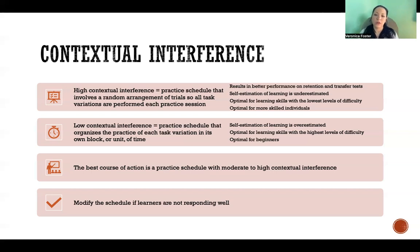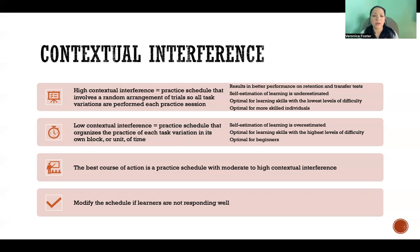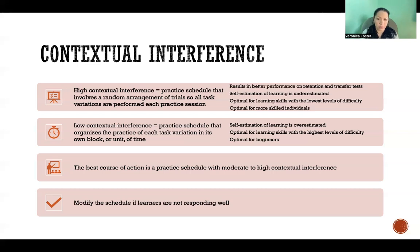High contextual interference is optimal for learning skills with the lowest levels of difficulty and for more skilled individuals. If the skills being learned are not overly complex, that's a good time for high contextual interference. Even if skills are more advanced, experienced learners benefit more from high contextual interference. Low contextual interference is optimal for the highest levels of difficulty — very complex and very new movements — and especially for beginners, who benefit from practicing the same thing again and again. As beginners become more skilled, they will benefit more from high contextual interference.